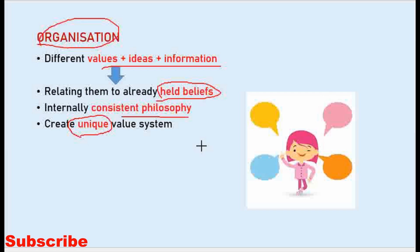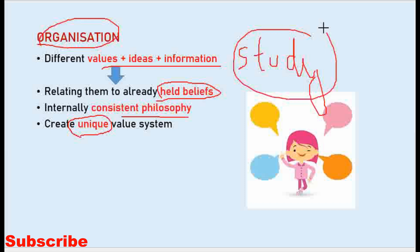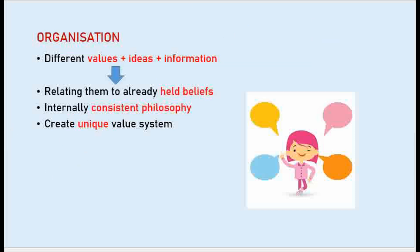An example of organization: giving importance to study compared to playing sports like cricket — organizing life and learning things and studying in order of importance. Also, maintaining a balance between work and family is organization. You prioritize time based on your unique internal value system.